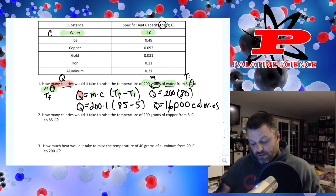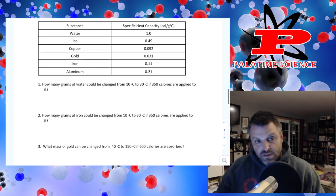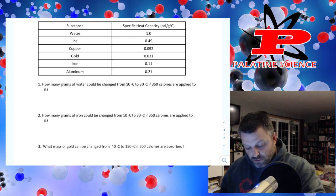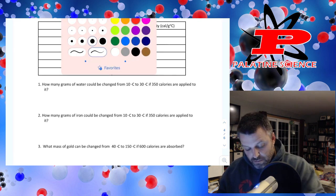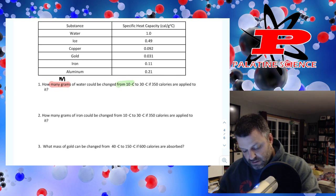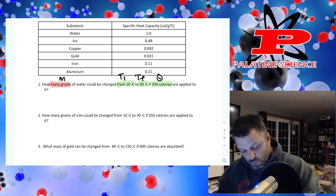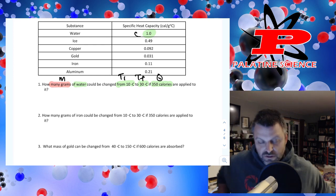Now let's solve for one of the other variables. In this next equation I am looking for mass — how many grams. My unknown is mass. My givens are: from 10 degrees Celsius to 30 degrees Celsius, so that's Ti and Tf. I'm given 350 calories, that's my Q. And I'm given water as my substance, so that gives me my C. I now have all variables accounted for — my unknown plus my four given variables.